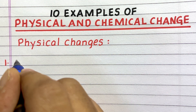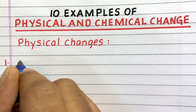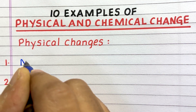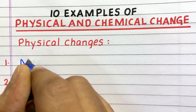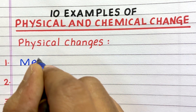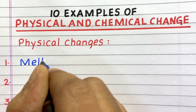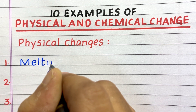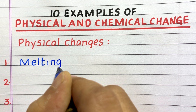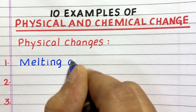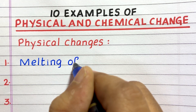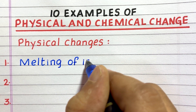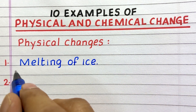Hello everyone, welcome to my channel. In this video I'll write 10 examples of physical and chemical changes. First example of a physical change is melting of ice.